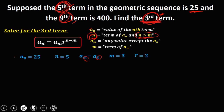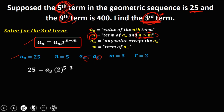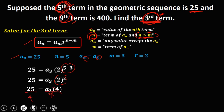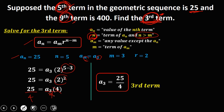Substituting into the formula: a sub n is 25, a sub m is a sub 3, r is 2, and the exponent is 5 minus 3 which equals 2. So 2 to the power 2 is 4. Dividing both sides by 4, we get a sub 3 equals 25 over 4. Therefore, the third term is 25/4.